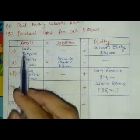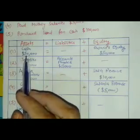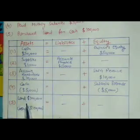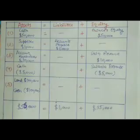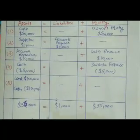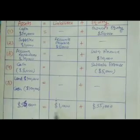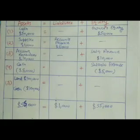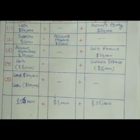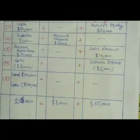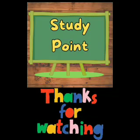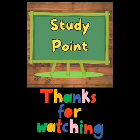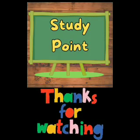Now we will total each column and see whether the accounting equation is balanced. You can see that Assets = Liabilities + Equity. If you have any query, you can ask in the comment section. Thanks for watching.